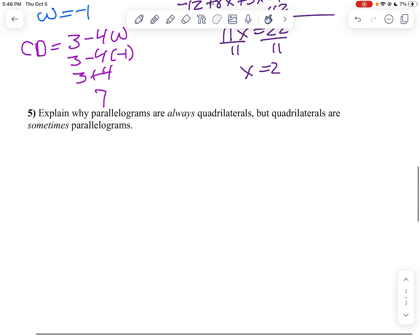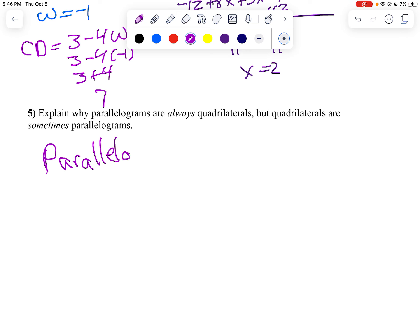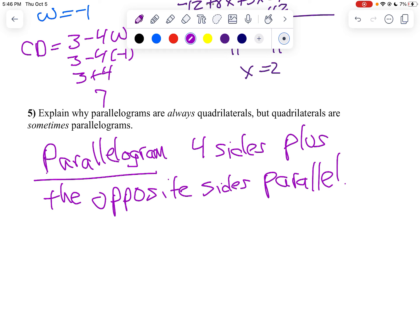And on question number 5, we want to explain why a parallelogram is always a quadrilateral, but quadrilaterals are sometimes parallelograms. And because that's the key definition of a parallelogram. A parallelogram is four sides plus the opposite sides are congruent or parallel. I think we'll go parallel because we know the opposite sides are parallel.